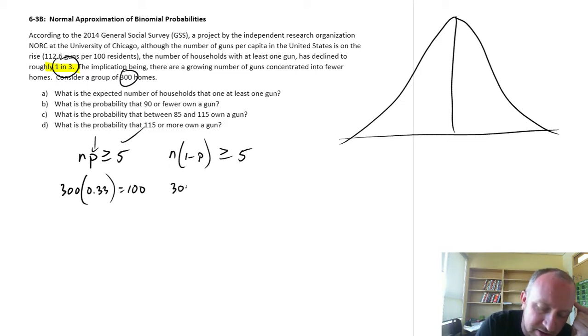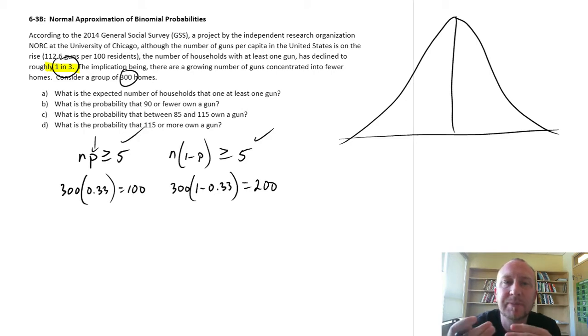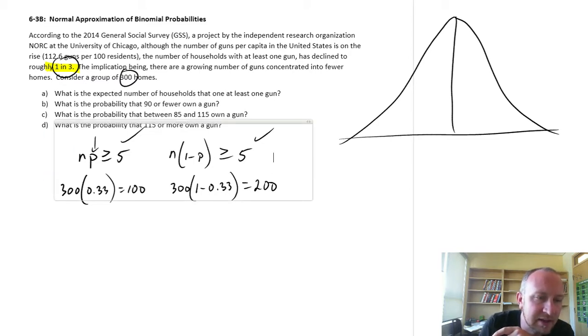And same here, this is 300 times one minus 0.33. So that'll be roughly 200. So yeah, that checks out there. So our sample size is sufficiently large that we can approximate these binomial probabilities safely enough with the normal distribution.